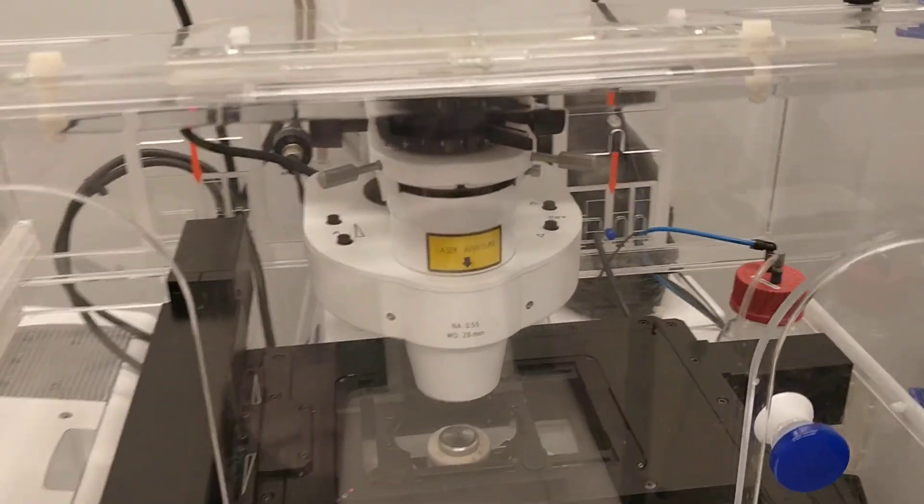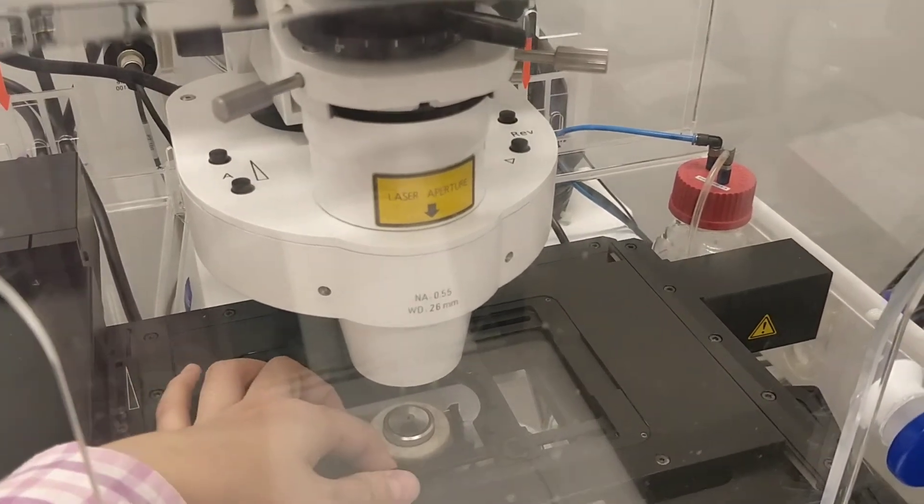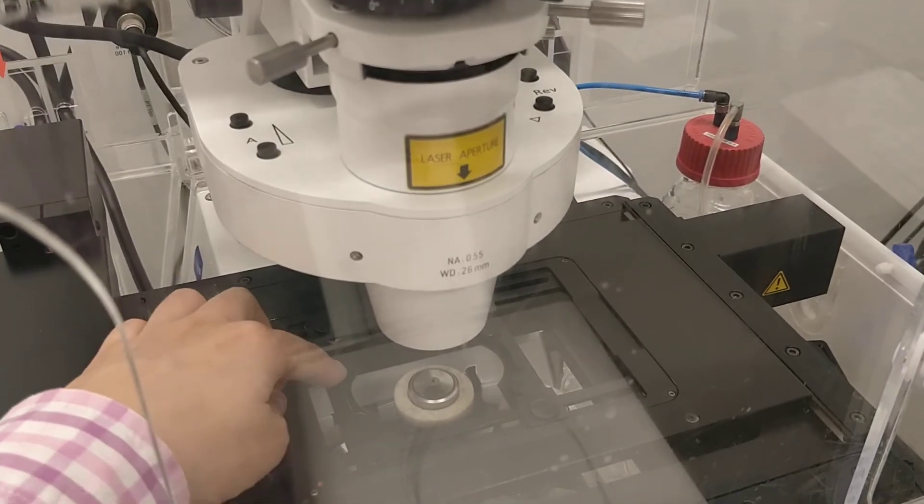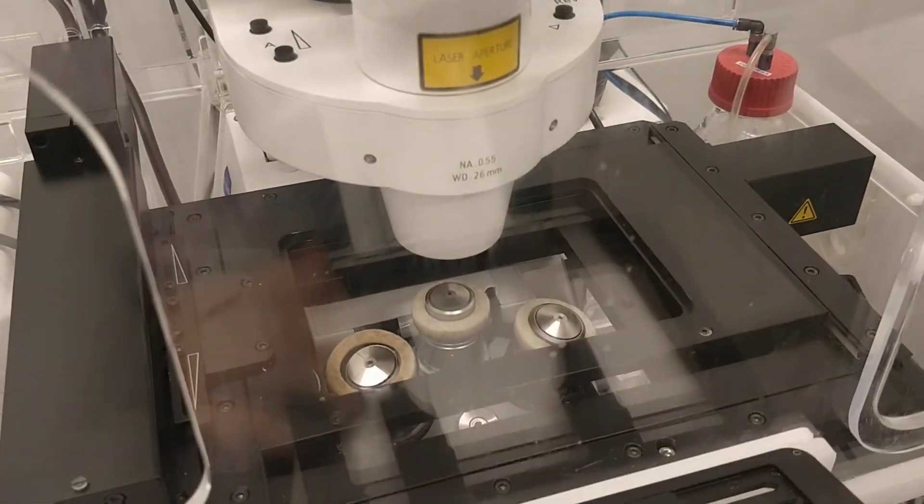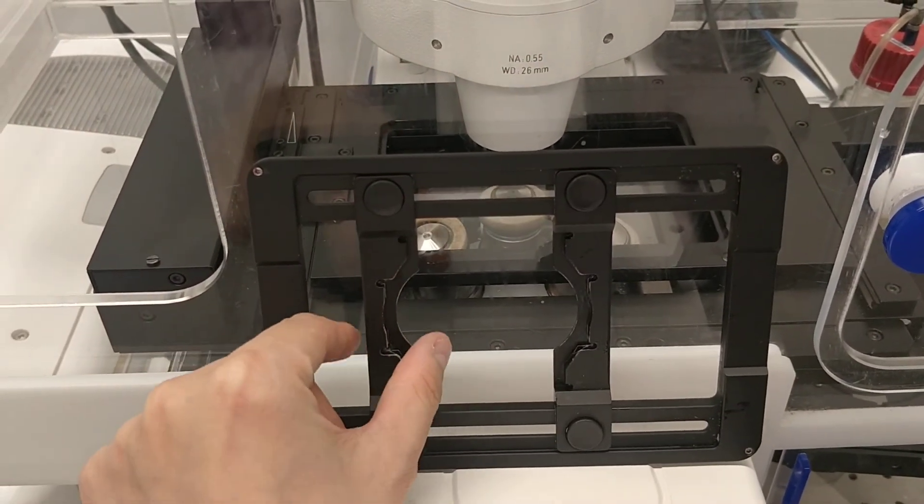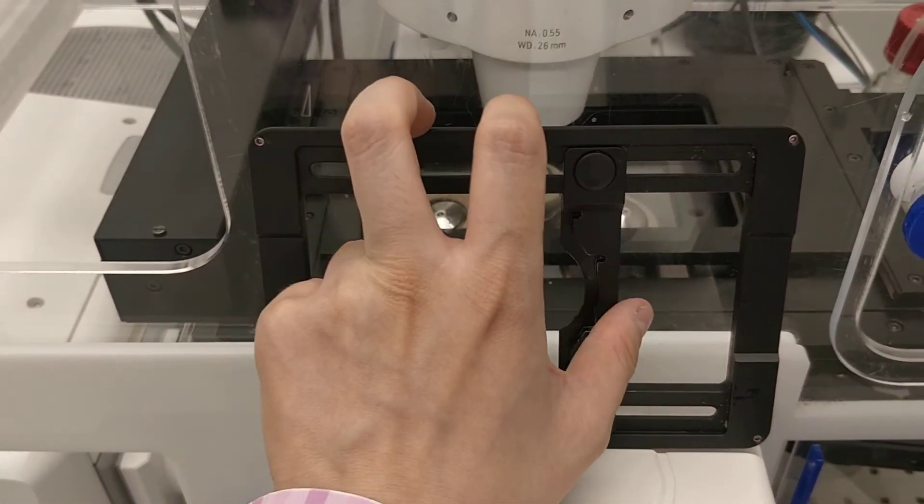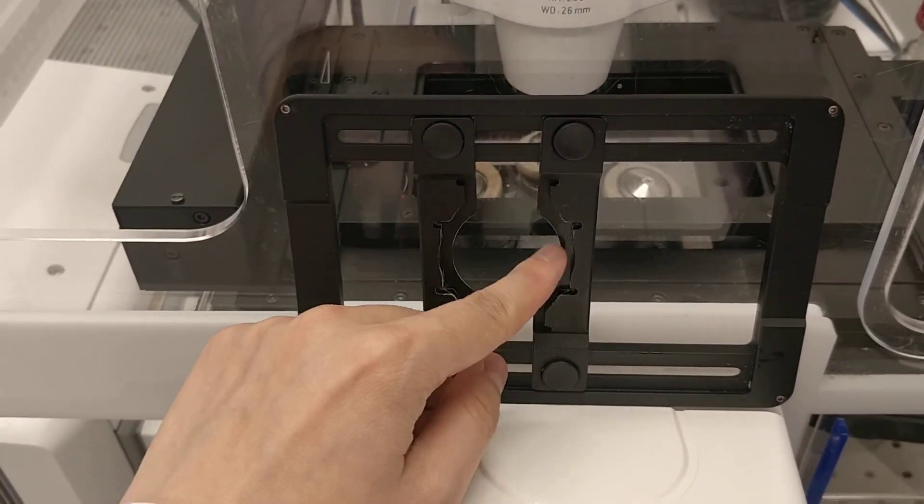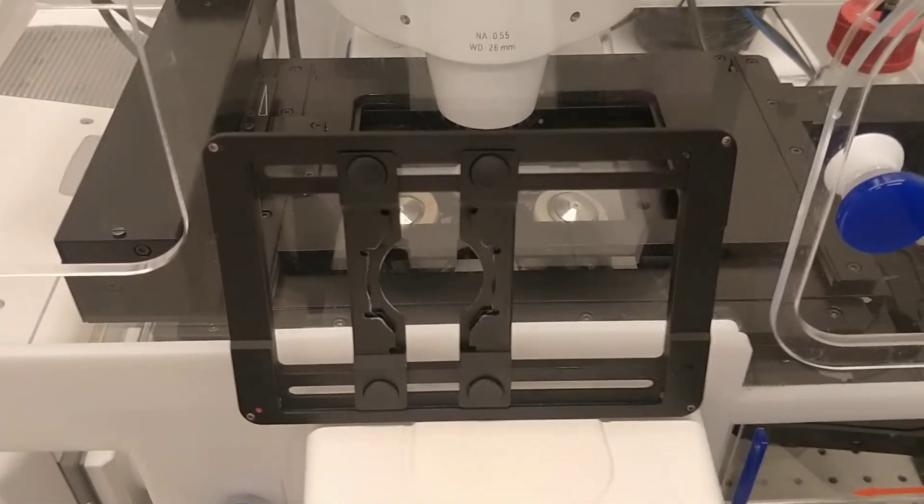So now this is the sample insert. If you see here, this insert we can actually take it off. So this one is for slide, so you can see, I'll take this off. So this slide you can just put it here, and then you can adjust it if your slide is a bit shorter, a bit longer. And this is also for a 35mm dish, so if you squeeze this closer, then the dish can be put in here. So this you can change it.